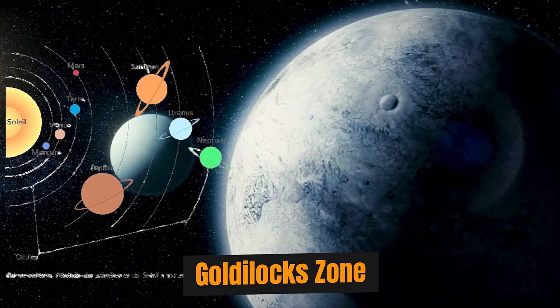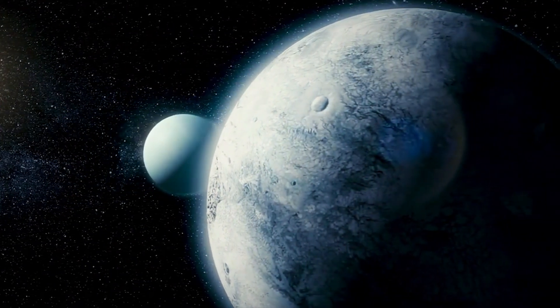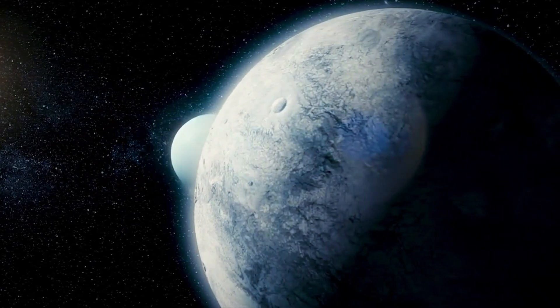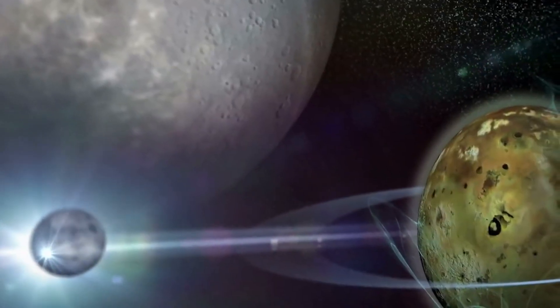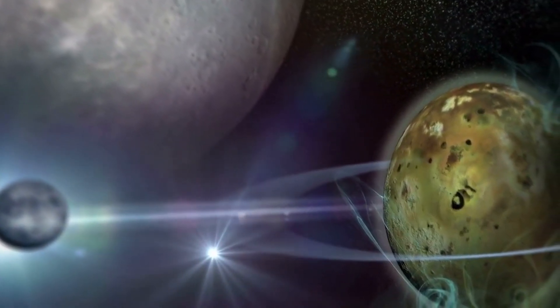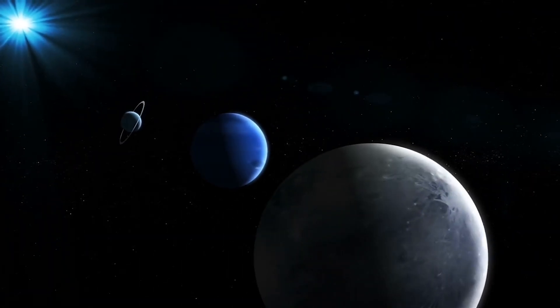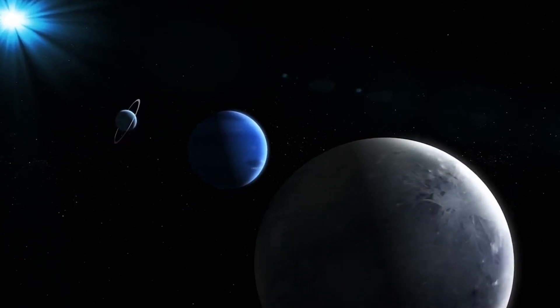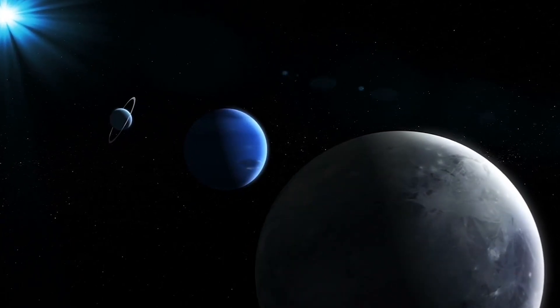The Goldilocks zone, also known as the habitable zone, is a crucial concept in the field of exoplanet research, representing a region around a star where conditions are deemed just right for the potential existence of liquid water. A key ingredient for life as we know it, this zone is neither too hot nor too cold.